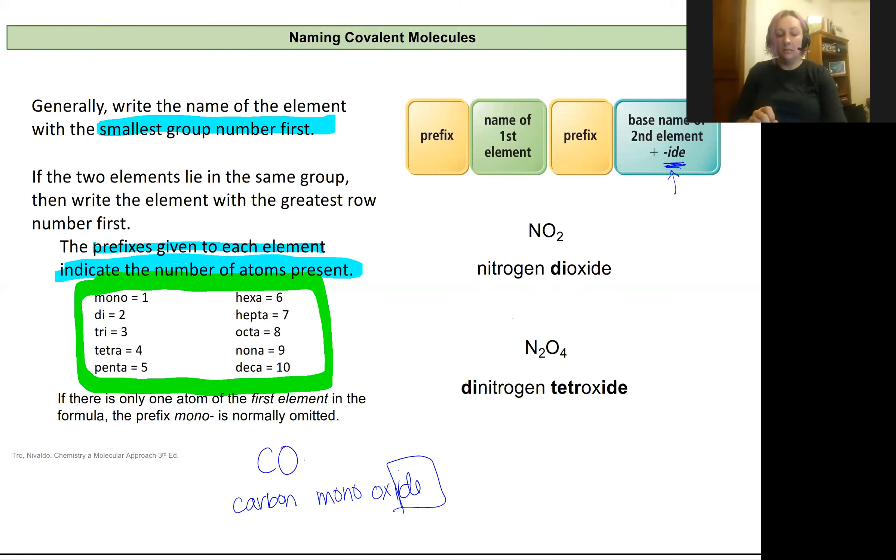For this one, nitrogen with two oxygens, we would have mono nitrogen. But since it's the first one, we don't include it. Our first element is just named off the periodic table, the way it appears there, just like we did with ionic bonding. Then we have two oxygens. That two translates into a di prefix, and then we add the IDE ending on our oxygen. So we get nitrogen dioxide.